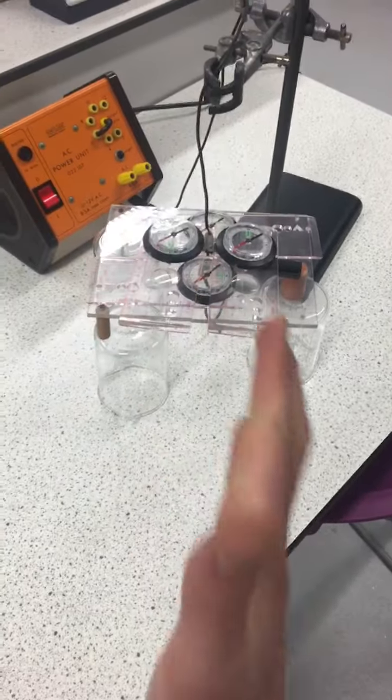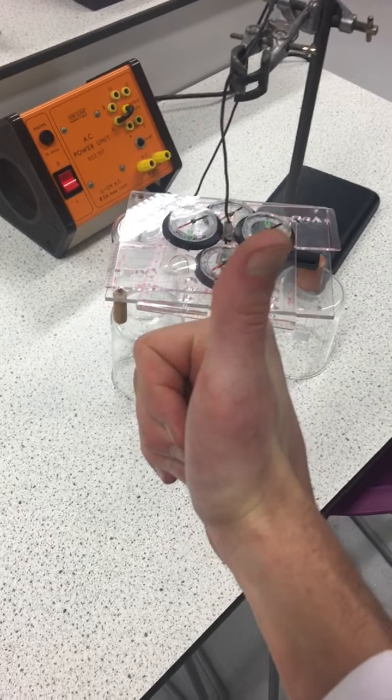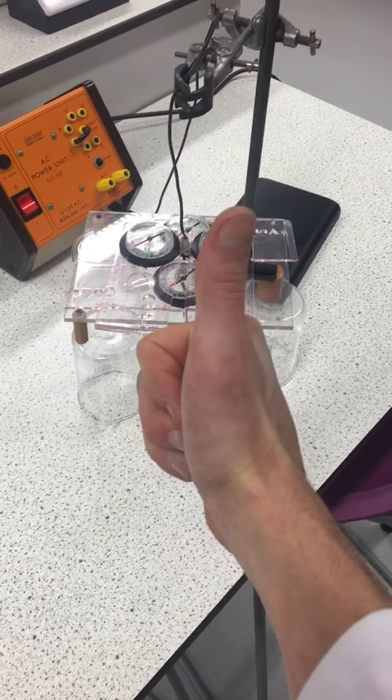When I turn the current on through the wire, the current moving up should induce a magnetic field moving around the wire like that using my right hand to work it out.